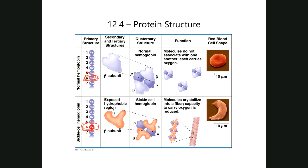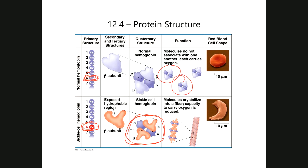Remember how we discussed that when oxygen binds to hemoglobin there's a little bit of a change in shape? Well, as oxygen leaves hemoglobin, there's also a change in shape in the opposite direction, so that little patch is exposed. That leads to hemoglobins that would normally be fully independent and soluble aggregating into fiber-like structures. These hydrophobic patches associate through London dispersion forces, forming fibrous needle-like entities within the body of the red blood cell, causing it to acquire the sickle shape.